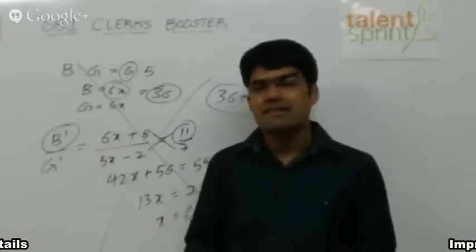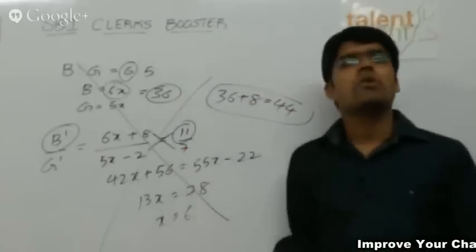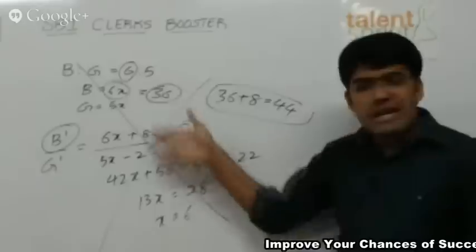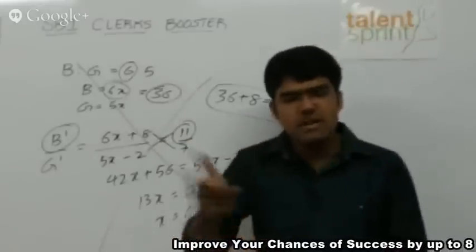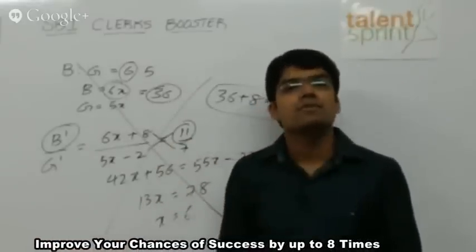I can say that third option is the answer. If at all you go for fourth option, 36. Is 36 a multiple of 11? No. So without having to write any of these steps on paper, just by the verification from the options, you can say that the correct answer is option 3.